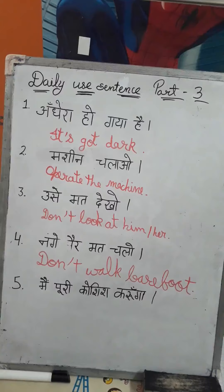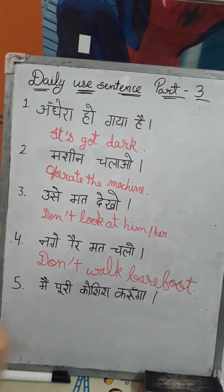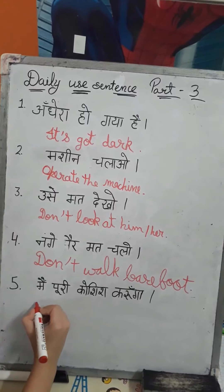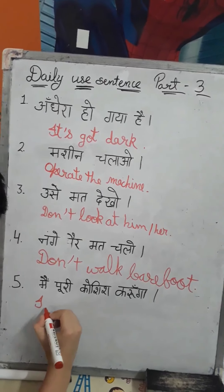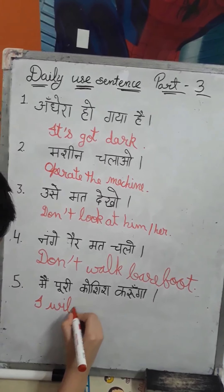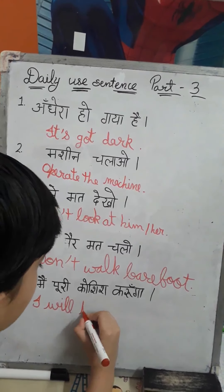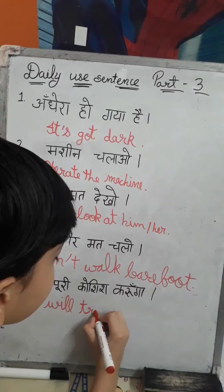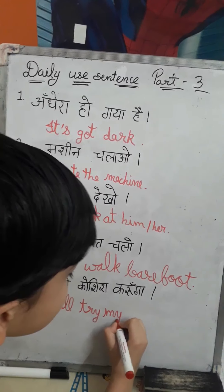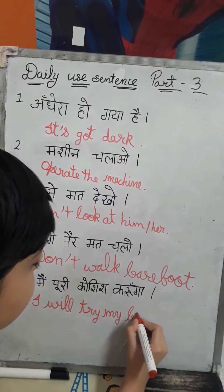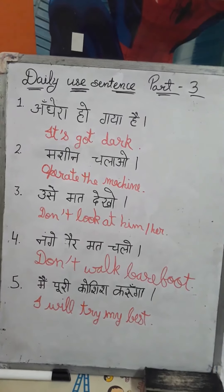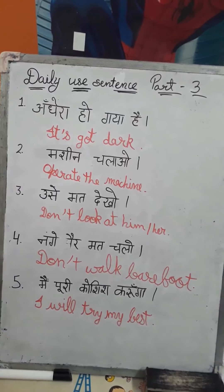So my fifth sentence is: Main poori koshish karunga. We will write it in English like: I will try my best. One more time — I will try my best.